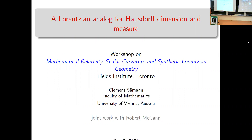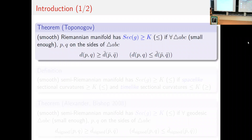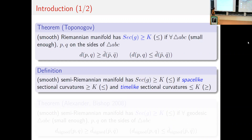I will talk about the Lorentzian analog of Hausdorff dimension and measure. As introduction and motivation: a smooth Riemannian manifold has sectional curvature bounded below by k if, for all small enough triangles, you take two points p and q on the sides and compare the distance of p and q with the distance of corresponding points on the triangle in model space — a two-dimensional space of constant curvature k.